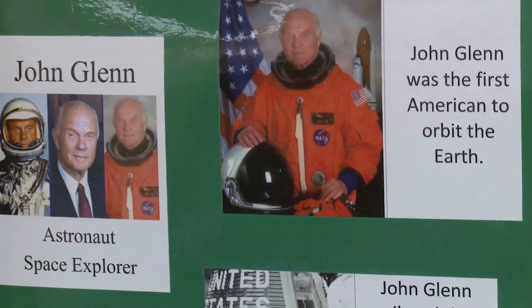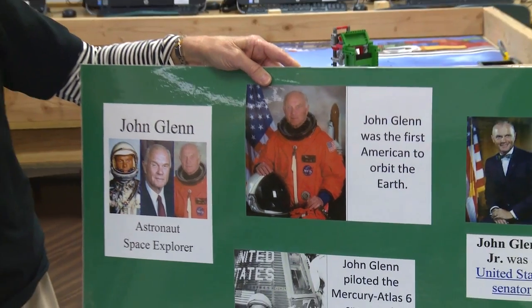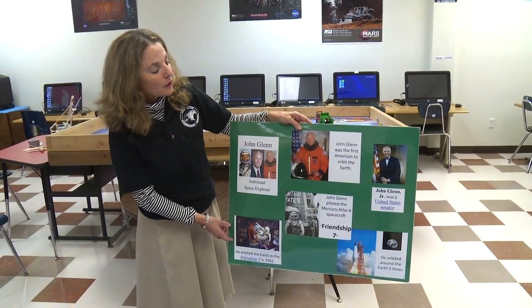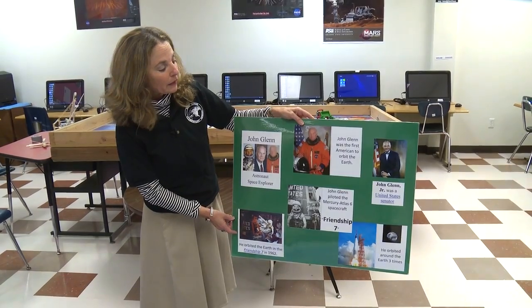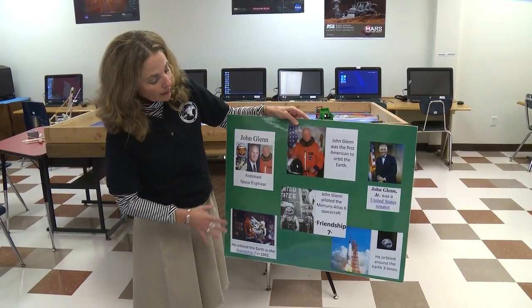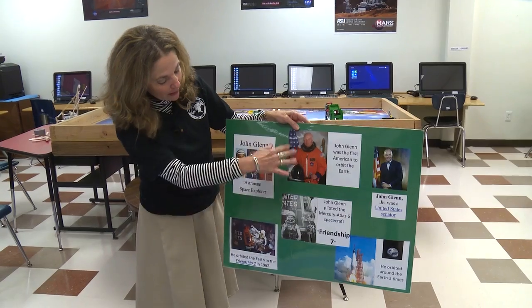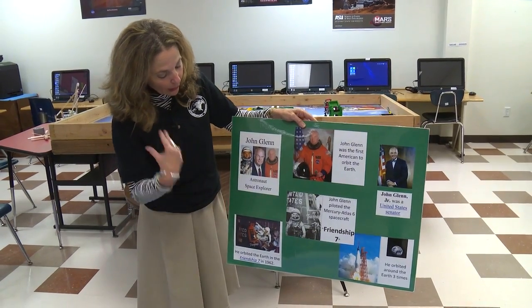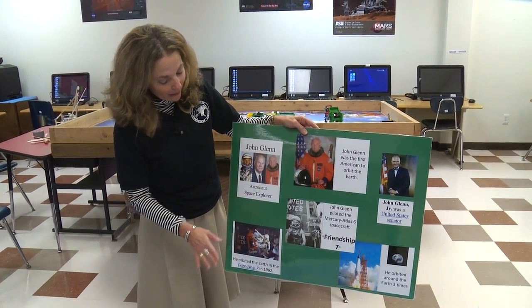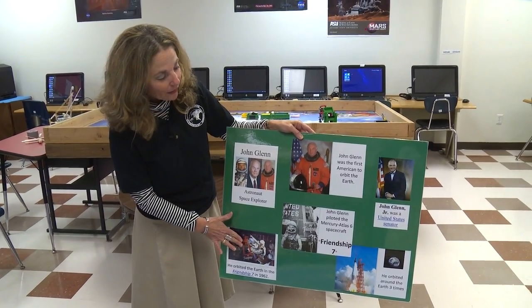They enjoyed it, and to this day they still remember who John Glenn is. What I did first was, the children need to have that prior knowledge, so to learn about John Glenn being the first American to orbit the Earth, we talked all about him — his space suit, what he wore, and then of course we went into the space capsule of the Friendship 7.